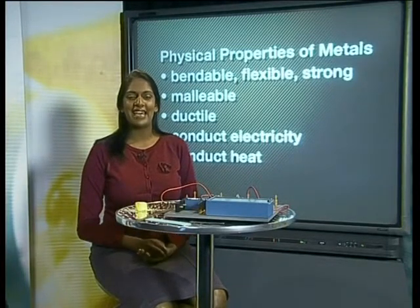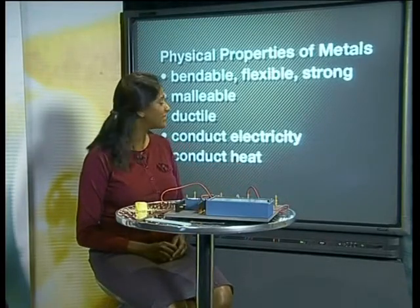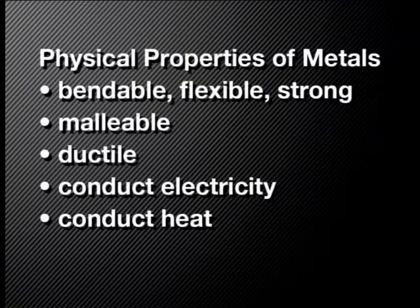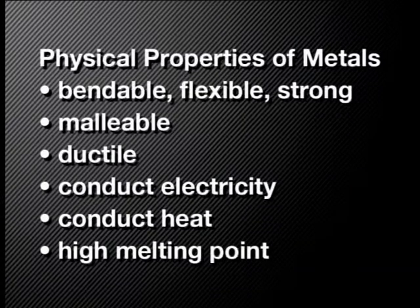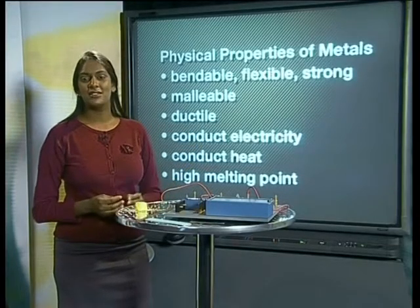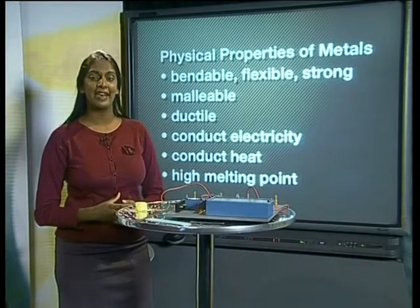Before we continue, let's add our observations to our list of the physical properties of metals. So far, we've observed that metals show the following properties: metals are flexible, malleable, and ductile. Now we can add that metals conduct electricity, conduct heat, and generally have high melting points. Because of their physical properties, metals are used to make a range of different objects that make them very useful in our daily lives. But what gives metals these special physical properties?